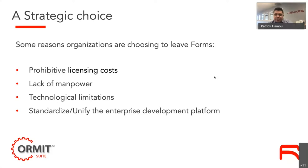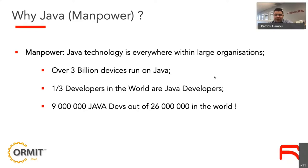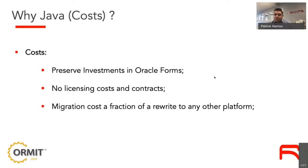Every perceived weakness in Forms is actually a strength in Java. What you get is a more powerful, more open application with more possibilities, including mobilization. In terms of manpower, there's no limit — there are a lot of developers worldwide using Java. And cost-wise, it's open source, so you can eliminate Oracle WebLogic licensing costs and move to Tomcat or JBoss.